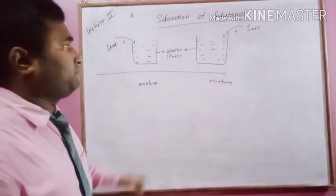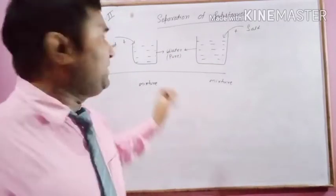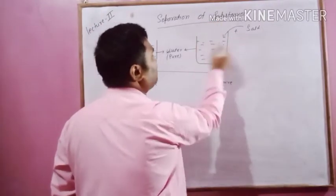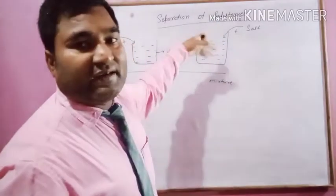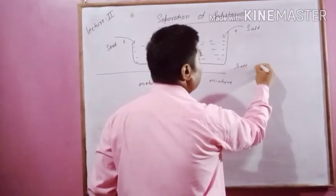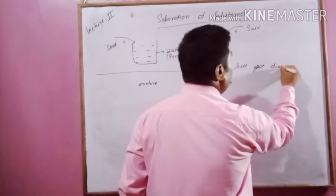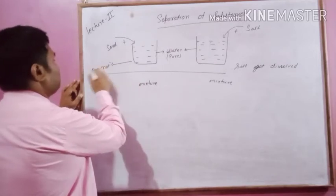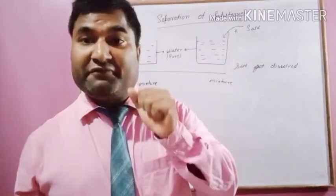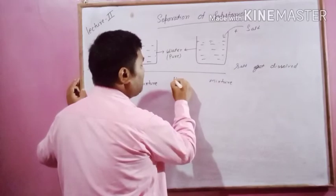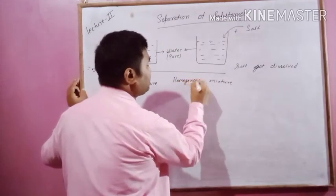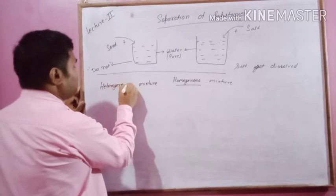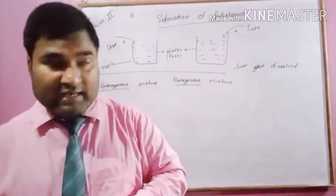What is the difference between these two mixtures? If you take salt and dissolve it in water, salt will dissolve evenly. But sand does not get dissolved. So there must be some difference — this one is a homogeneous mixture and that one is a heterogeneous mixture.